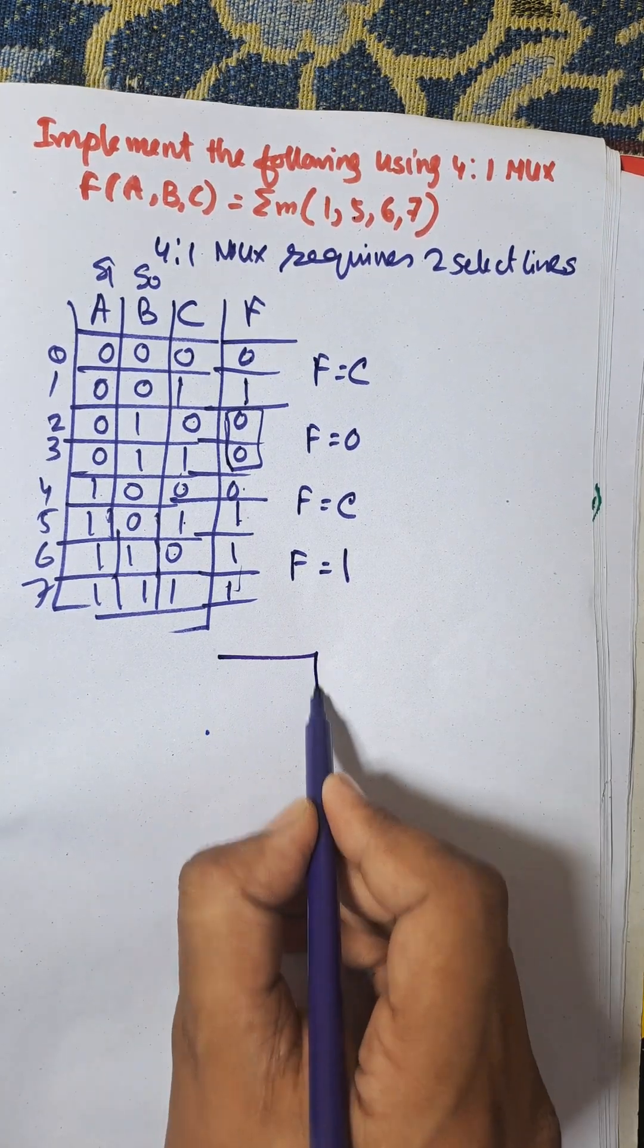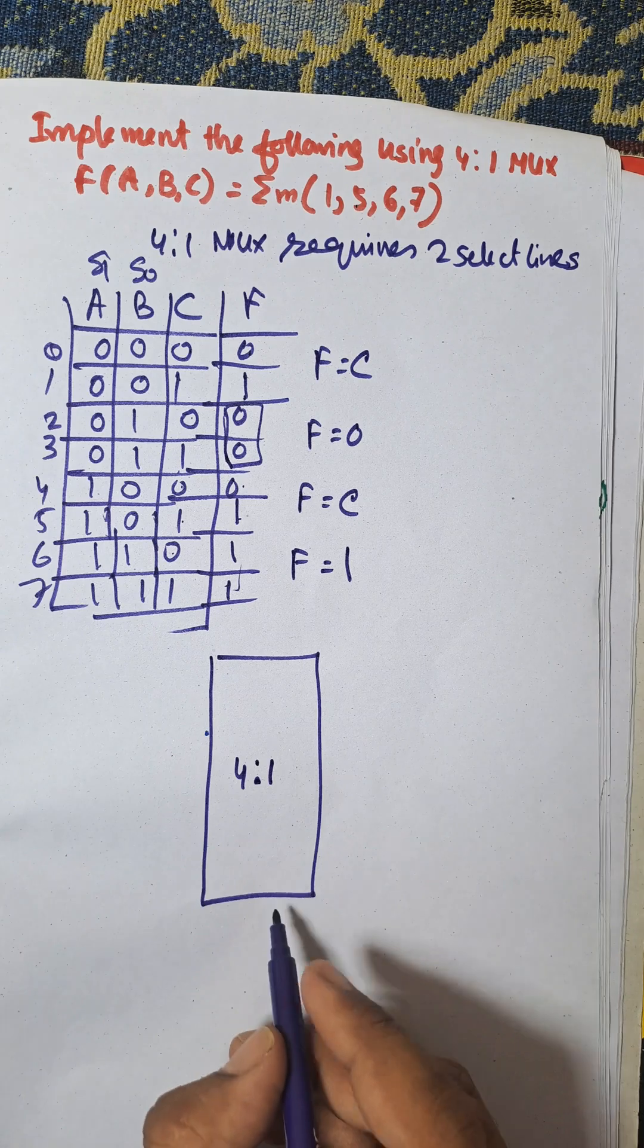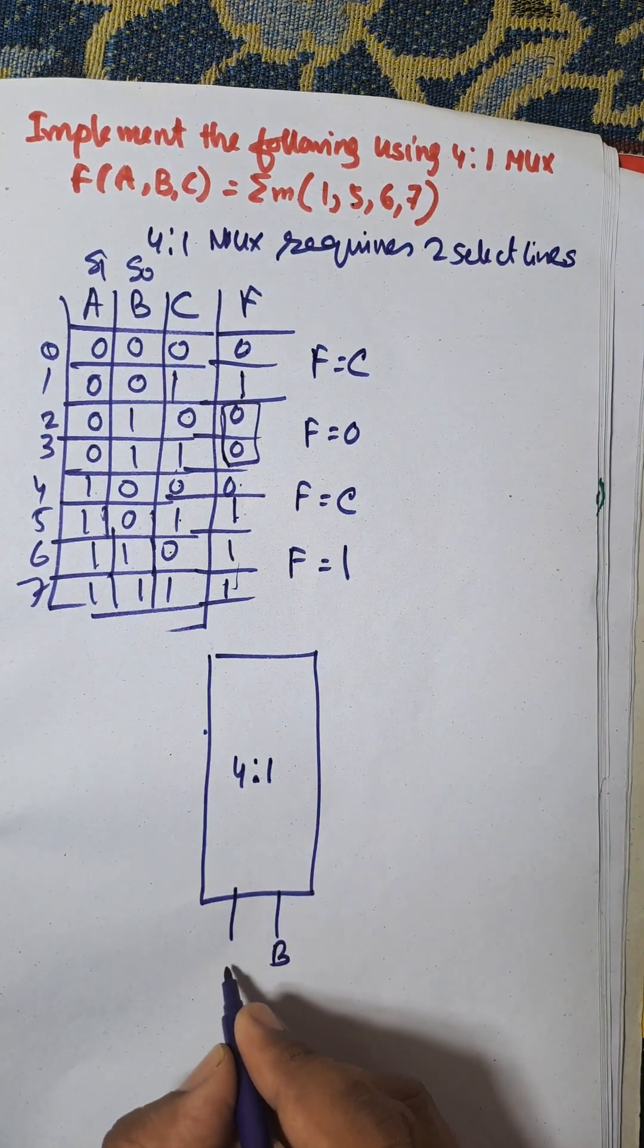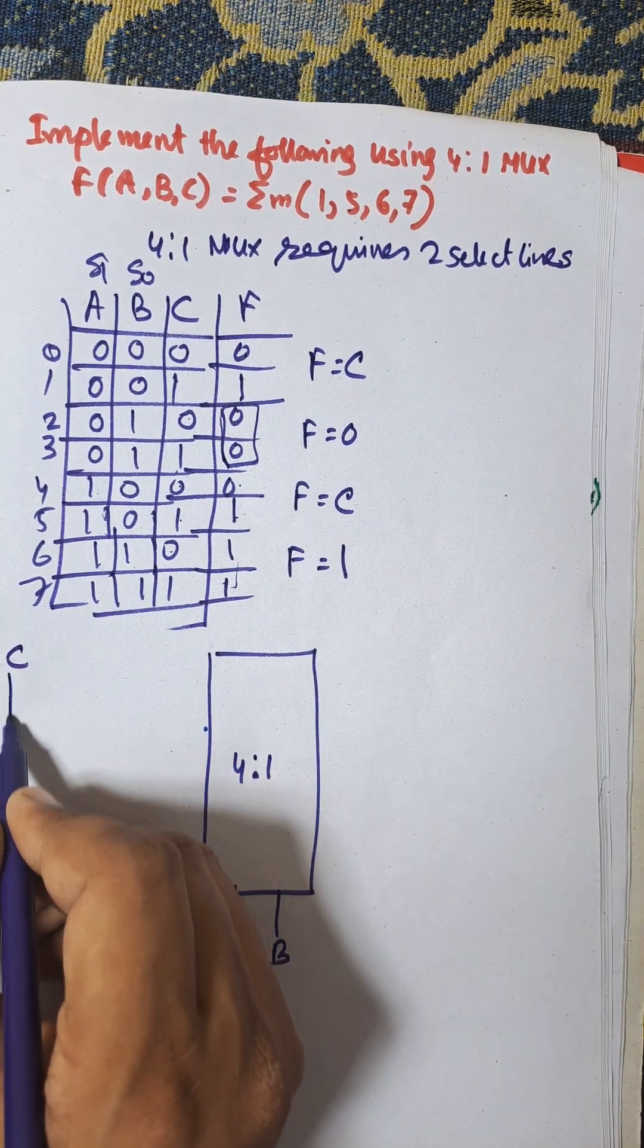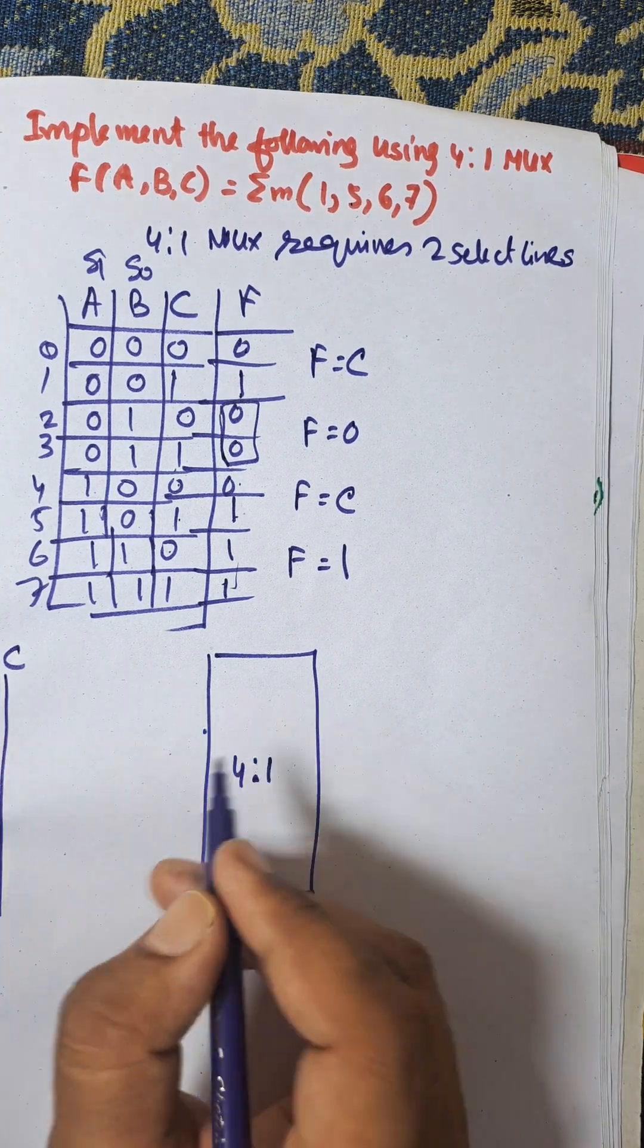Now we need to design the MUX. This is 4-to-1, and select lines - this is S0, there is B, and this is A. And this one is C, so this one is C. No need to consider C complement, so only C is there.